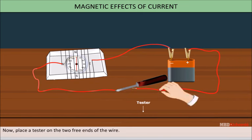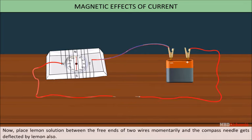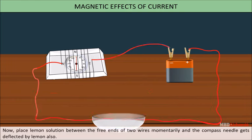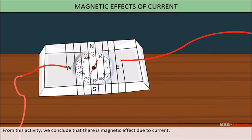Now, place the tester on the two free ends of the wire. You will observe that the compass needle is deflected by the tester. Now, place lemon solution between the free ends of the two wires momentarily and the compass needle also is deflected by lemon. From this activity, we conclude that there is a magnetic effect due to current.